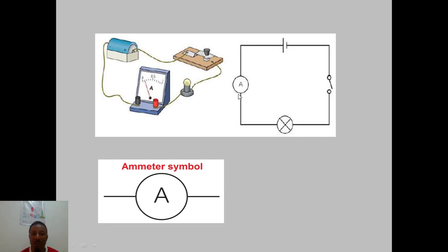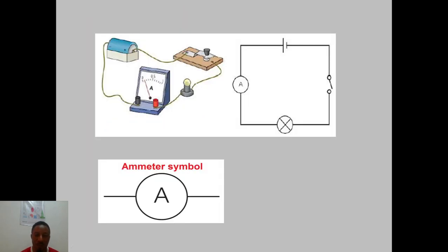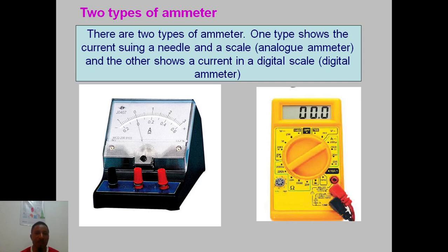Looking at the circuit diagram, if I were to draw it here I need to add an ammeter symbol. Notice that the switch comes before the lamp, just as shown here: from the cell, the switch, then the lamp, then the ammeter, and back to the cell. The symbol for an ammeter is a circle with a capital letter A.